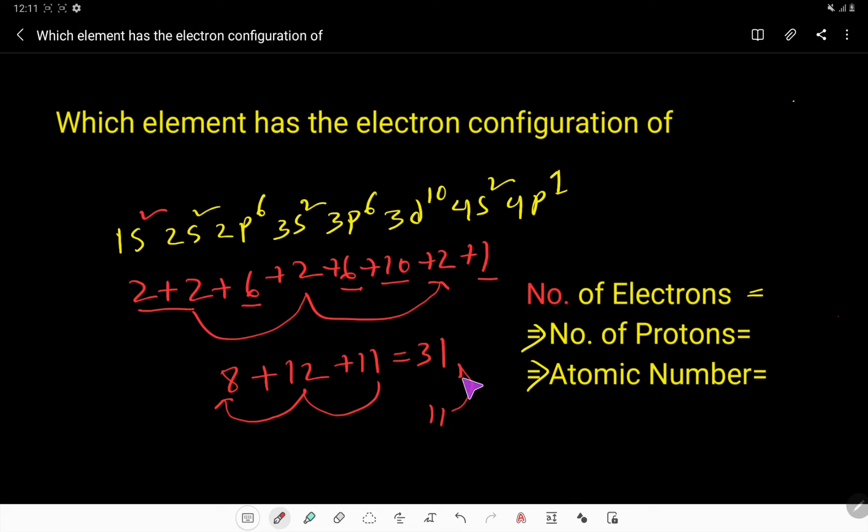11 here will be here, you have to place 1, then 1 plus 1 is 2, plus 1 is 3, so 31. So here the number of electrons is 31.